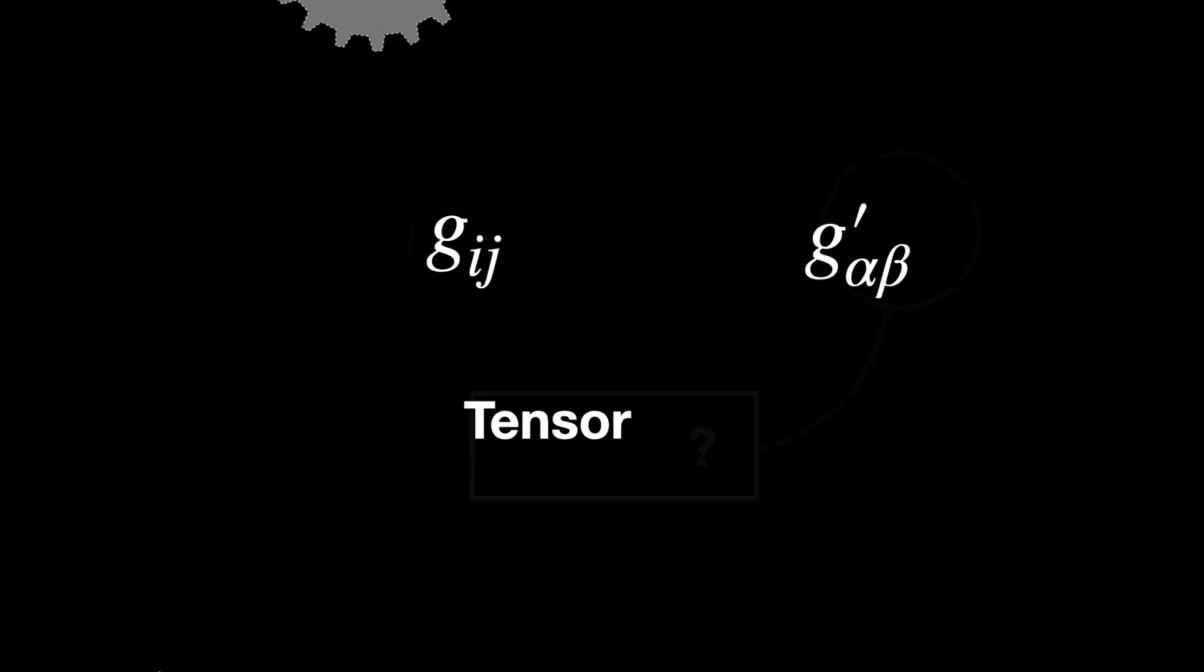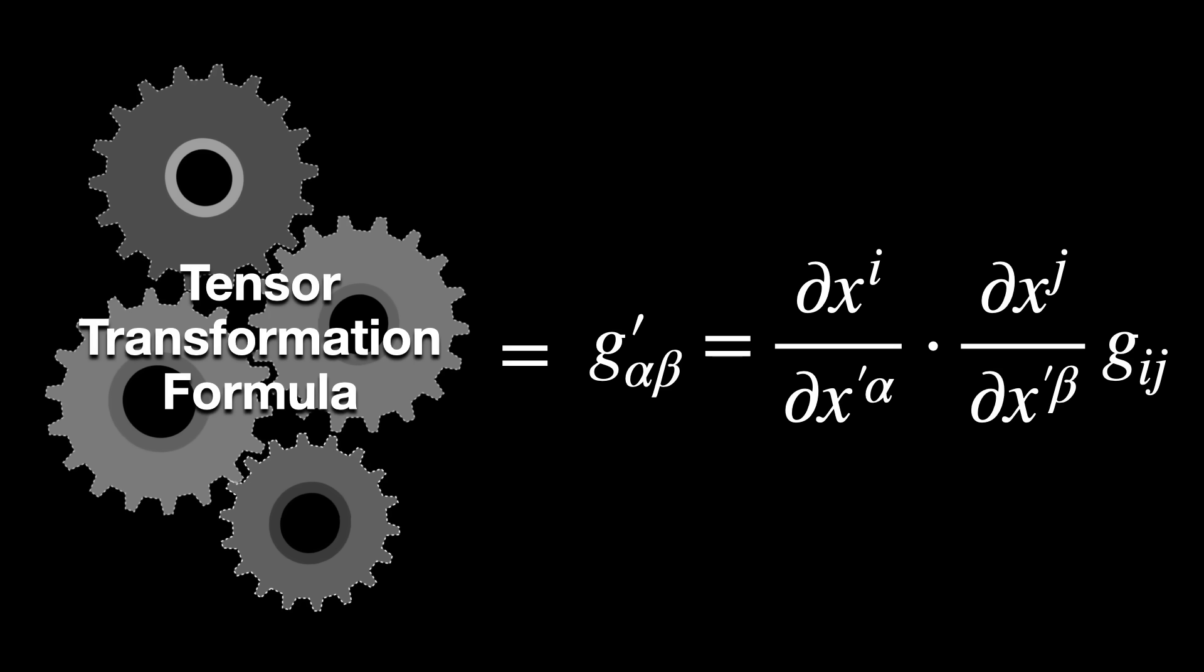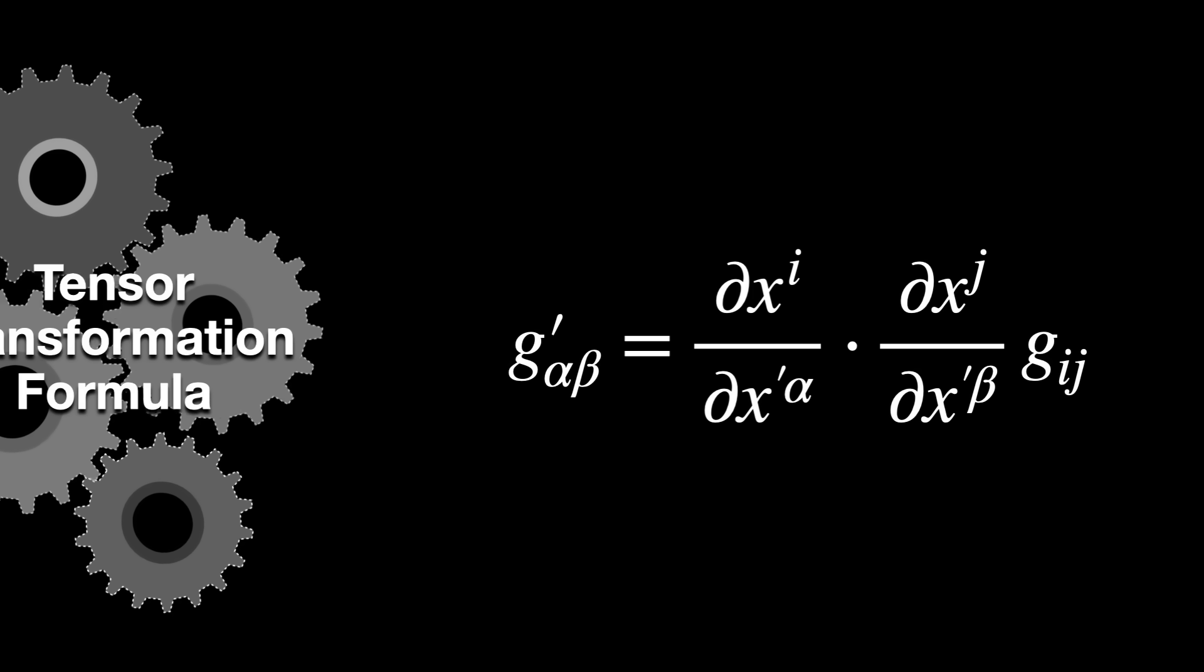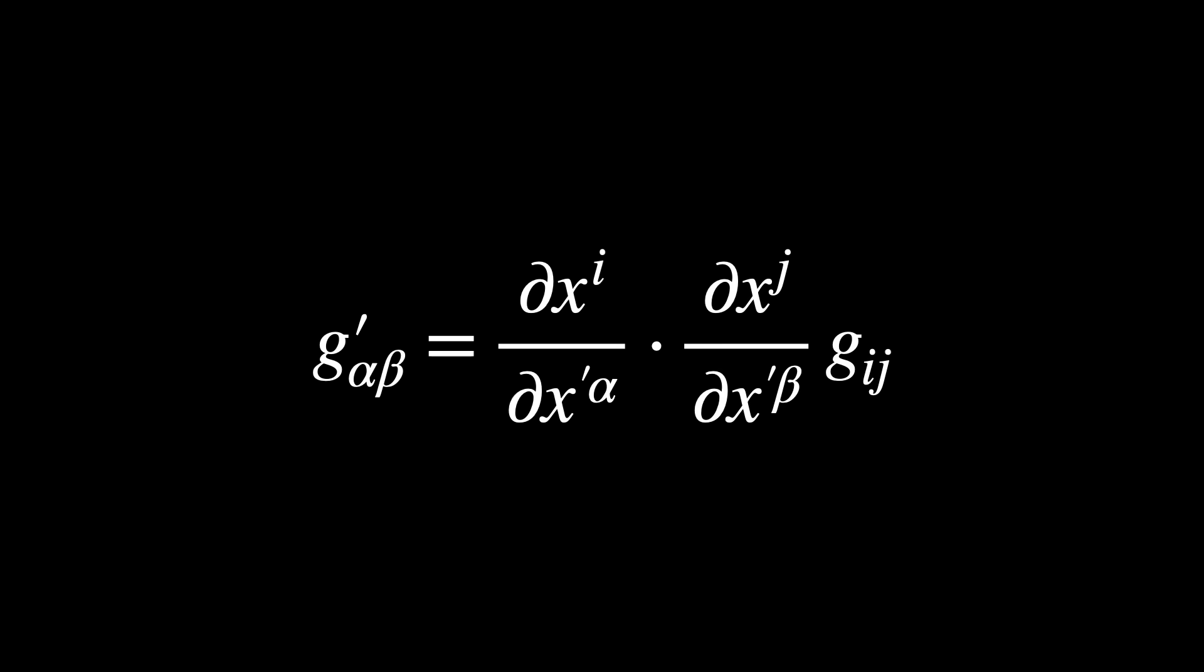And the answer is given by the formula for a legitimate tensor transformation. Failing to satisfy this equation would automatically disqualify an object as a candidate for tensor.